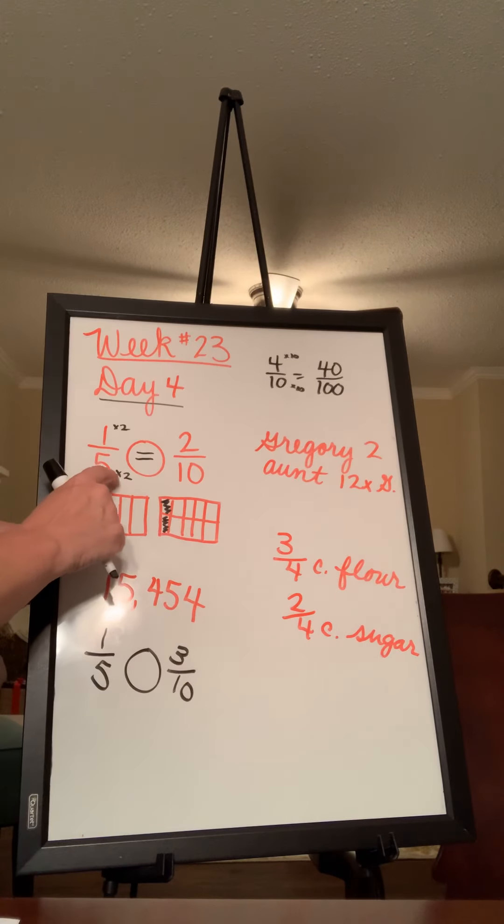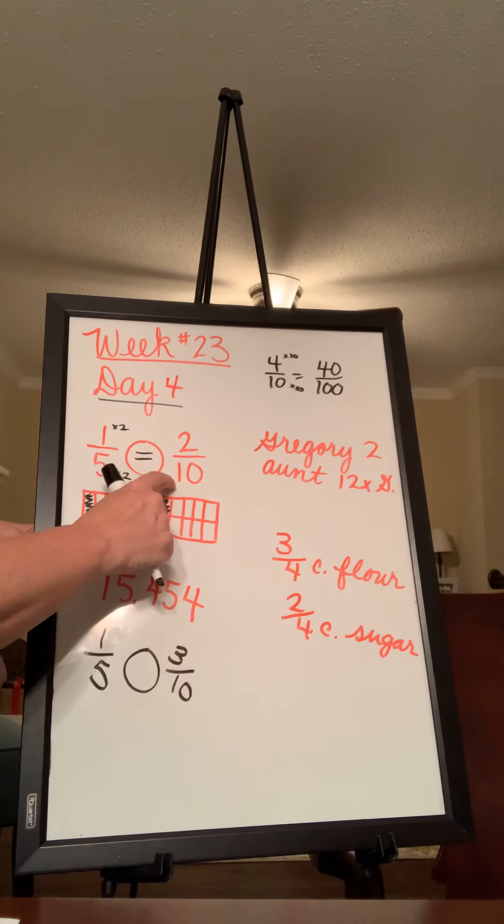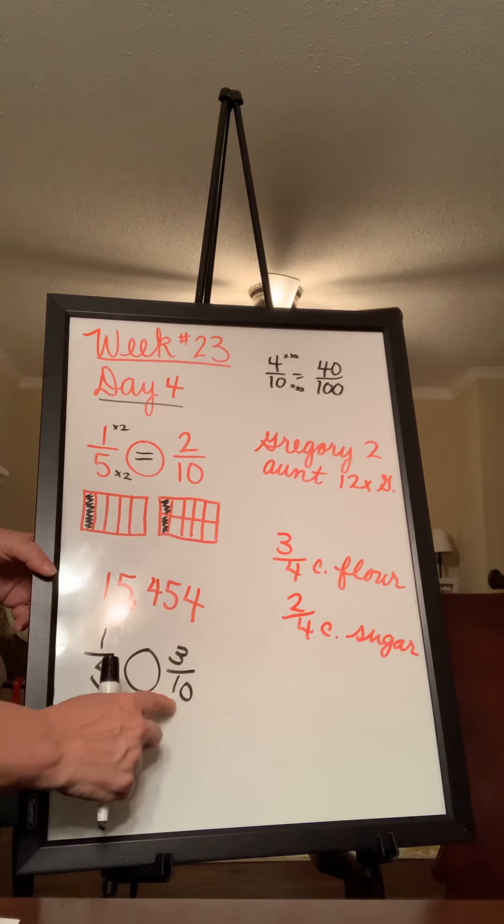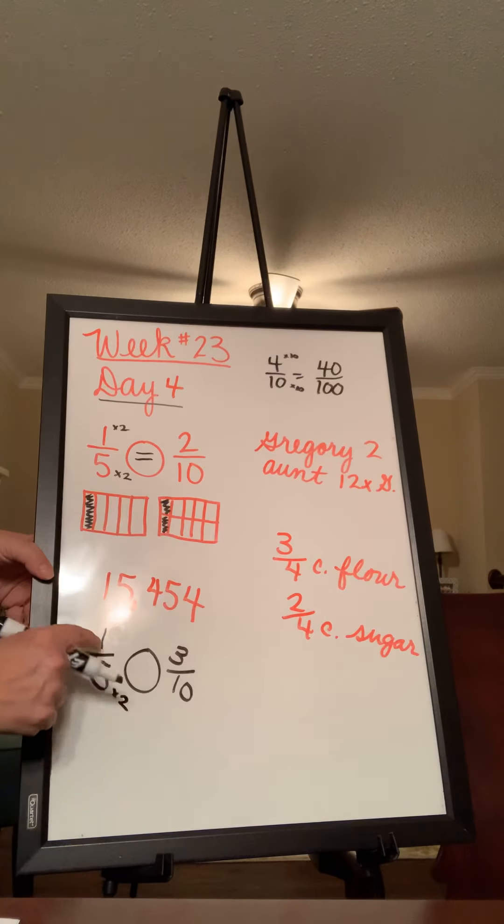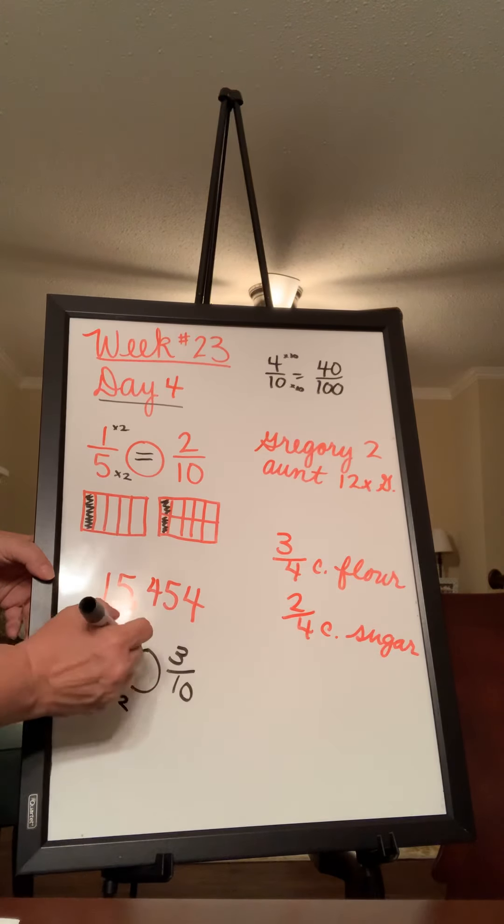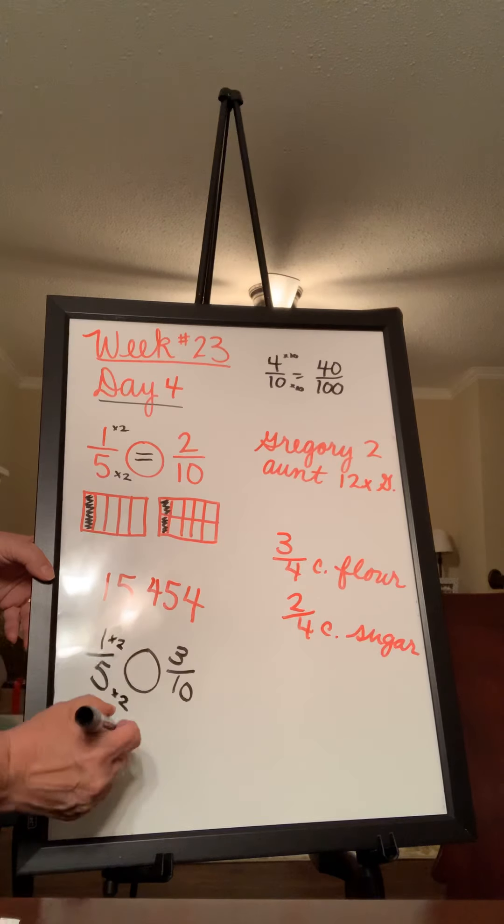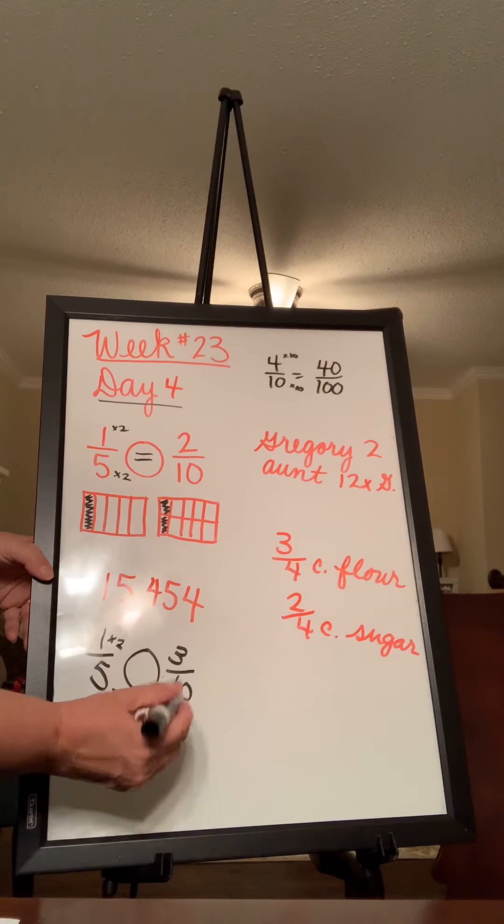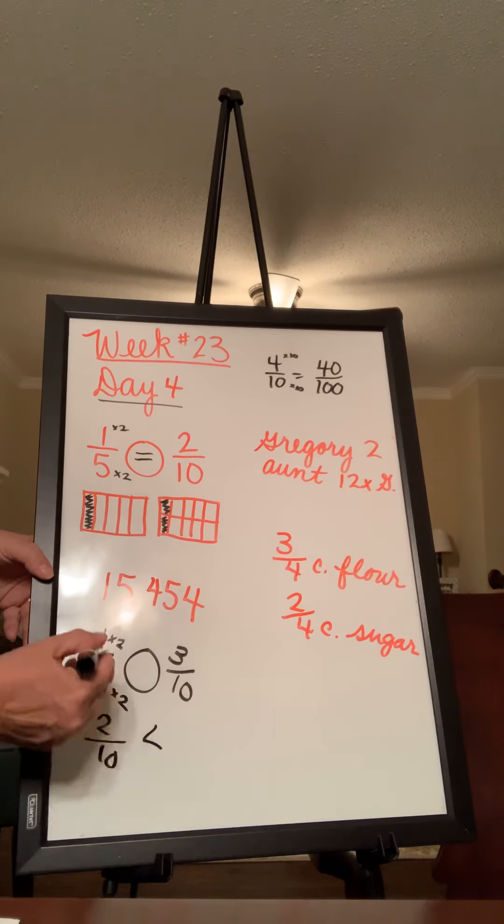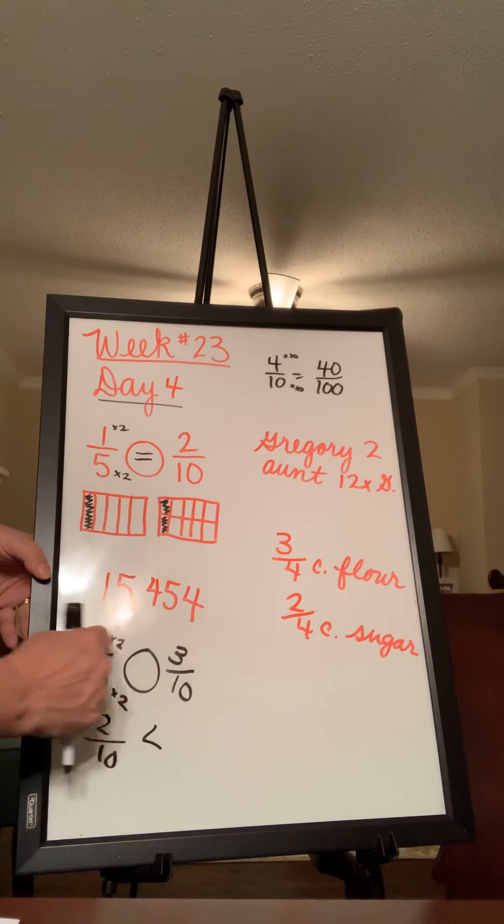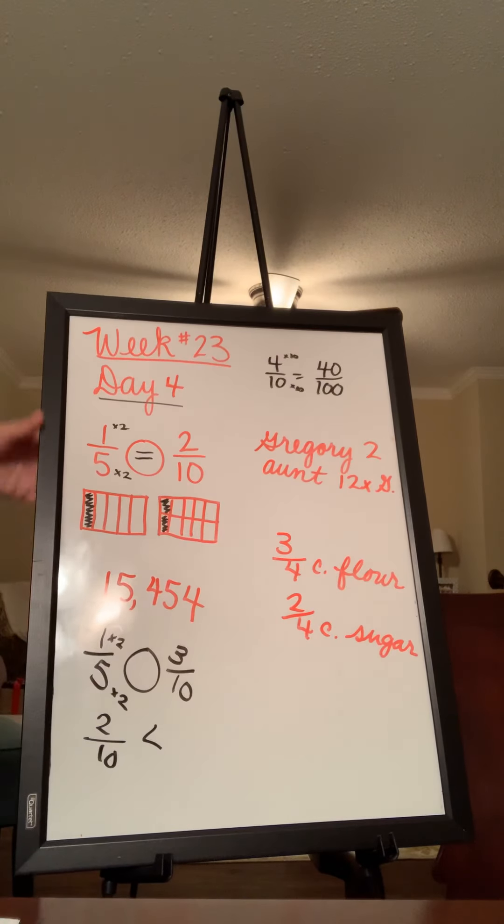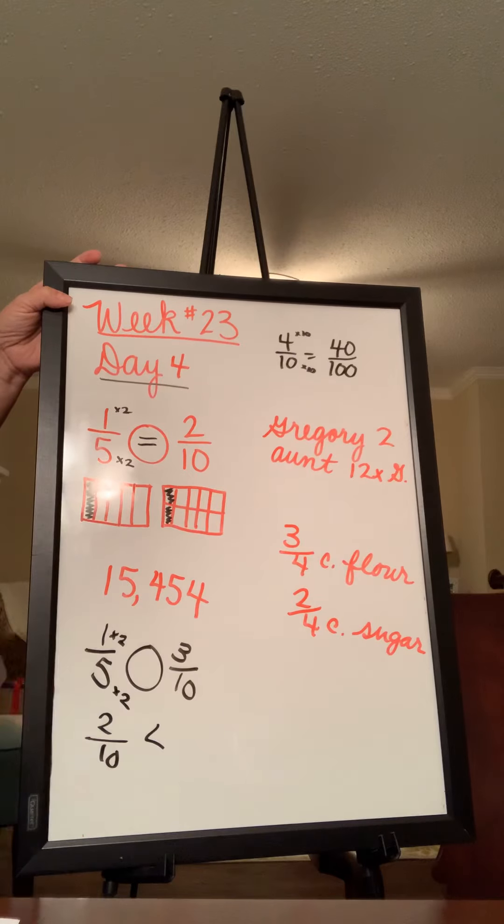Let's do it this way. And I should have done that here too. 5 times what is 10? And then do the top number. 5 times 2 is 10, like we did up here. But then 1 times 2 is 2. So one-fifth is equal to two-tenths, which is less than three-tenths. So this is how you would do it. If they weren't equal, you would make your denominators match, and then you could compare the two top numbers.